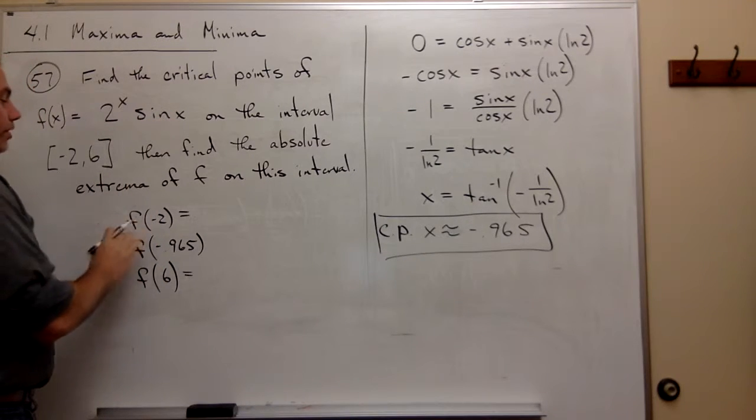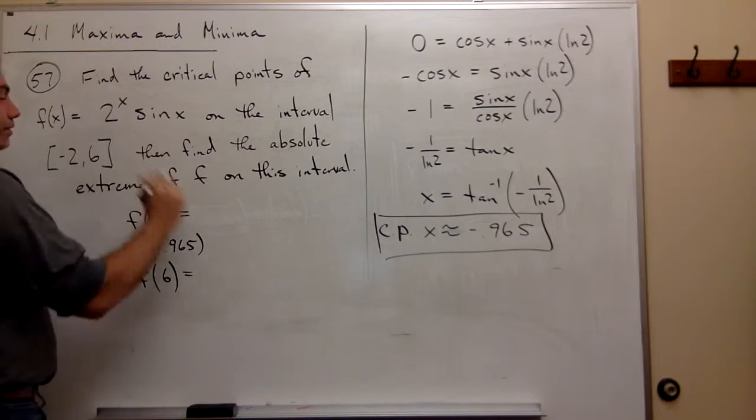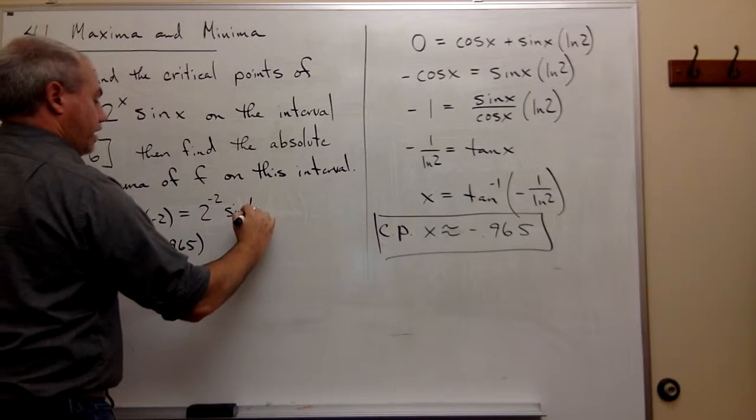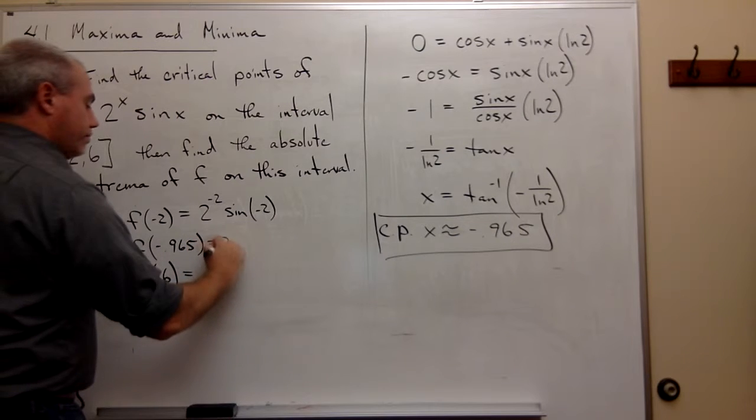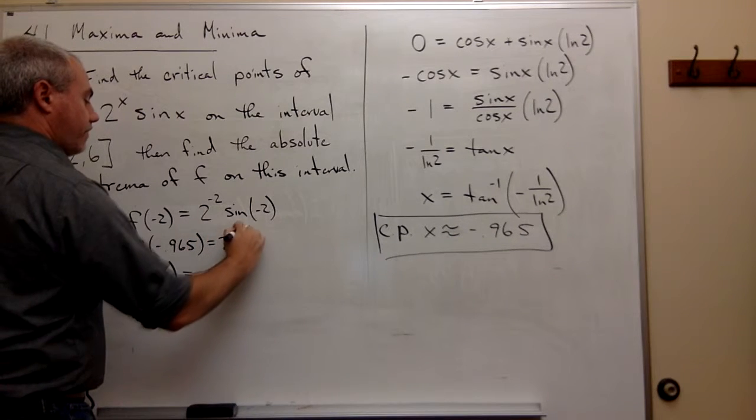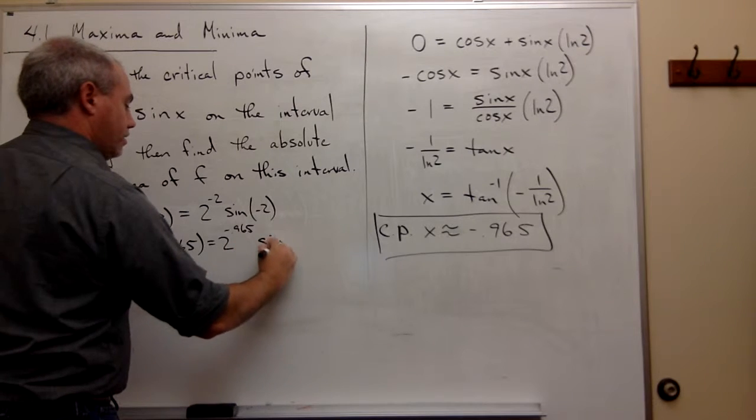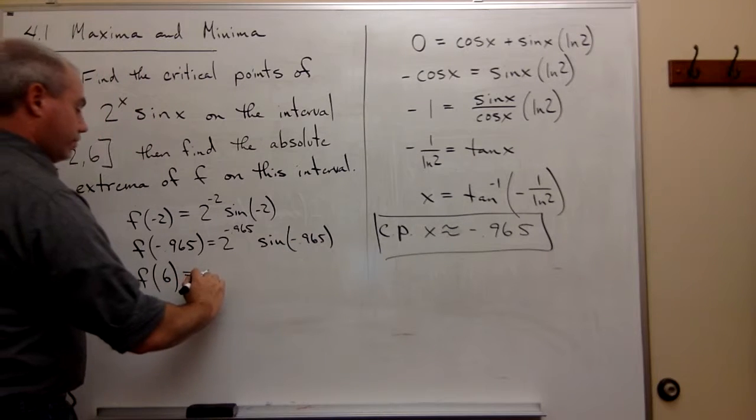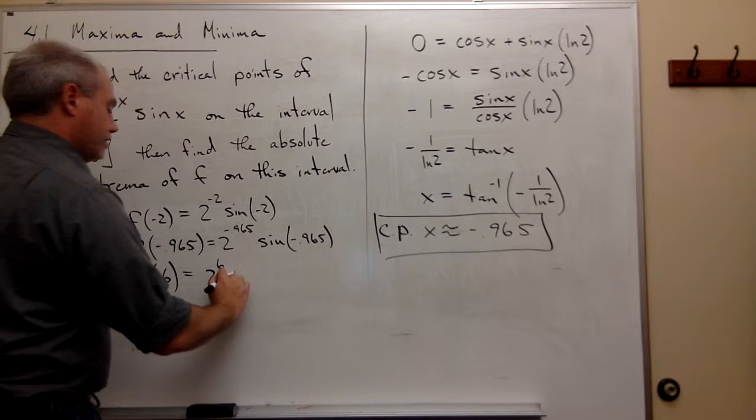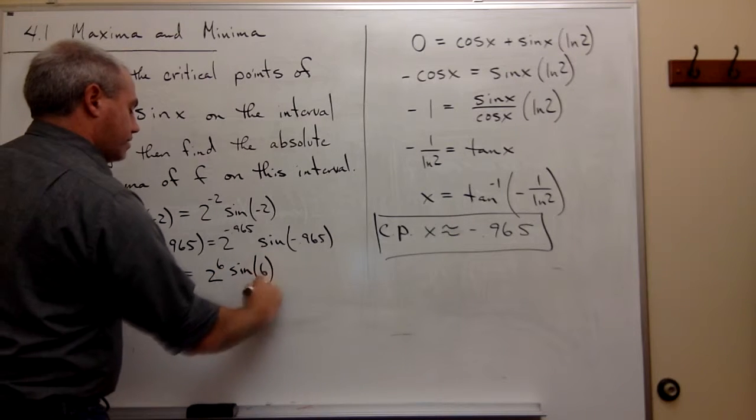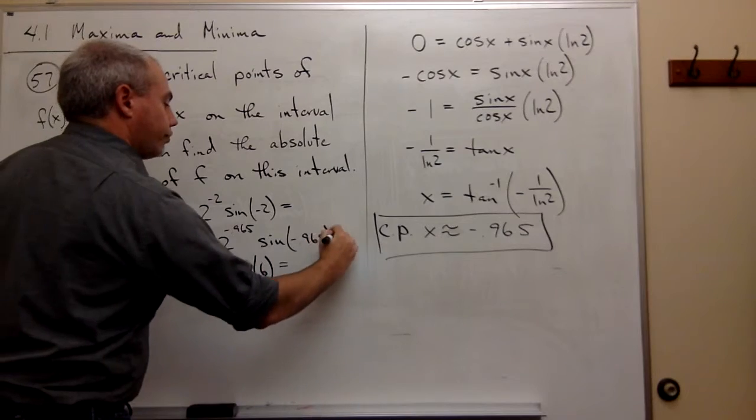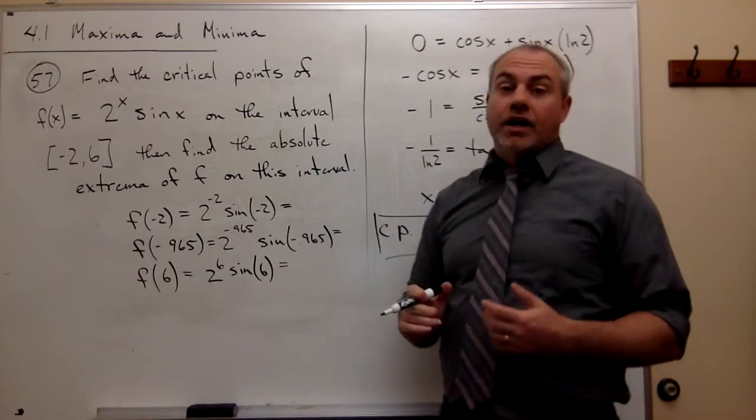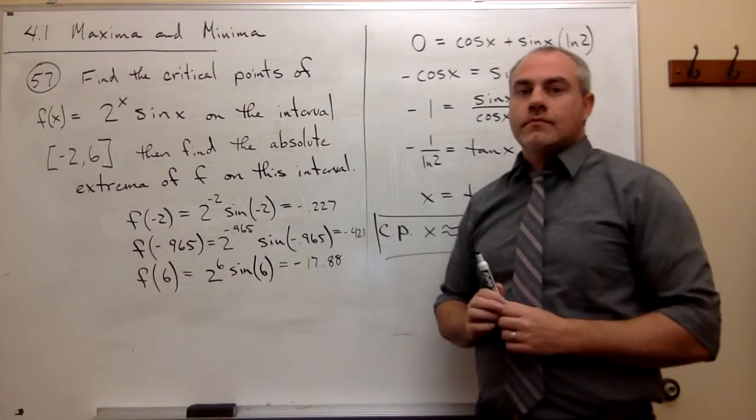So let's just see what we're going to be plugging in here. We're going to plug in negative 2, and I get 2 to the negative 2 times sine of negative 2. Here I get 2 to the negative 0.965 times sine of negative 0.965. And then finally I get 2 to the 6th times sine of 6. All three of these I need to use a calculator to find the answer. So let's do that real quick.